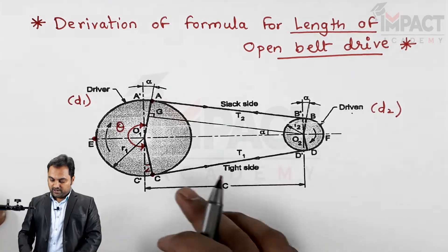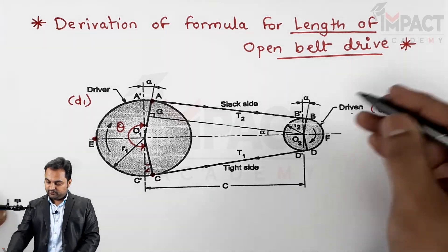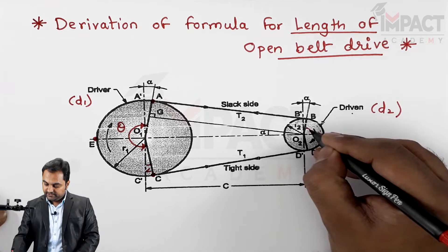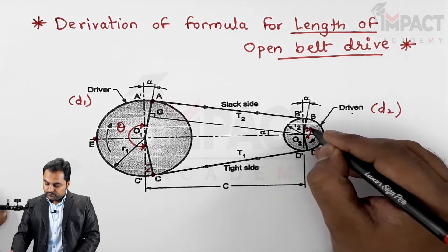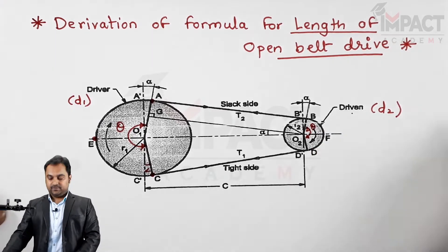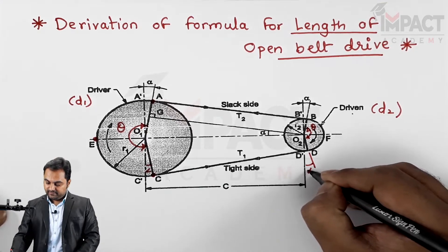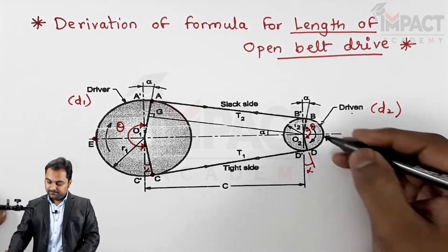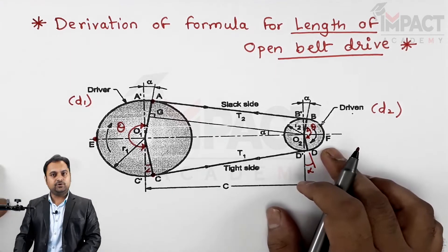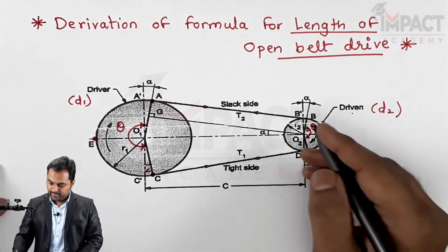So theta becomes 180 plus 2 alpha. For the smaller pulley, the angle of contact is less than 180 degrees, also denoted as theta. Because alpha is subtracted from both sides, the angle of contact here is theta equals 180 degrees minus 2 alpha.